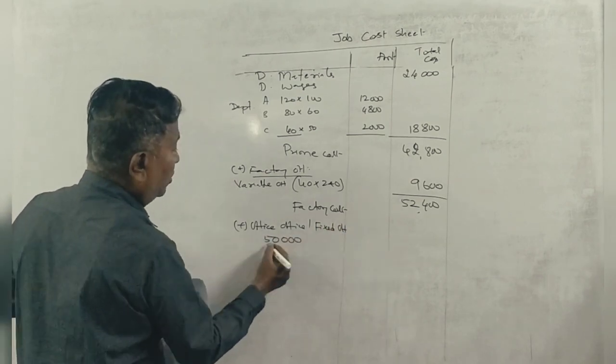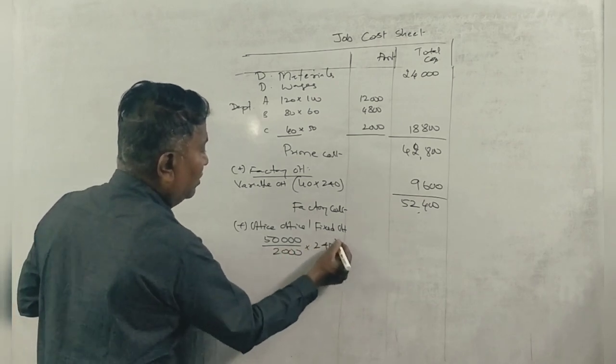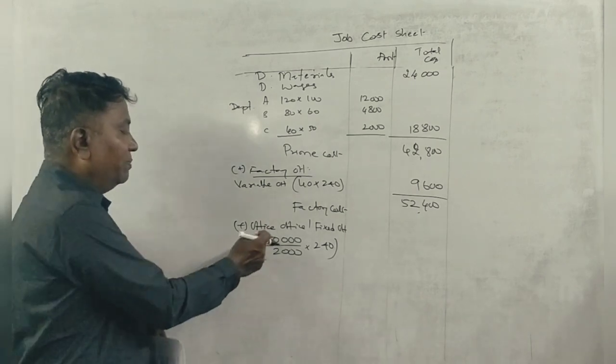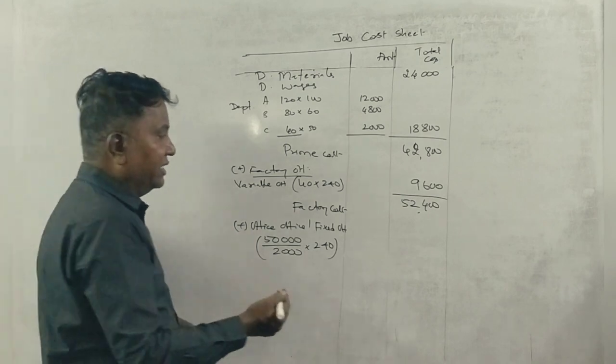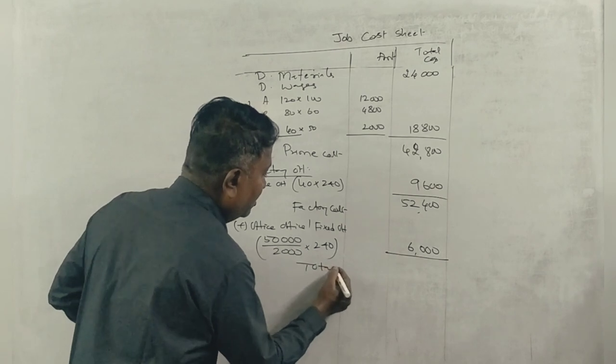Fixed overheads: ₹50,000 for 2,000 hours, but we worked only 240 hours, correct? That works out to ₹6,000. So total cost is ₹58,400.